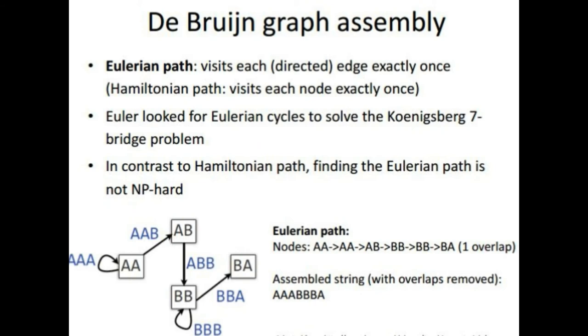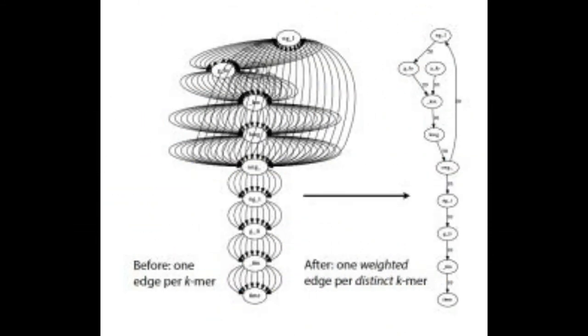The problem with de Bruijn graphs is that the repeats introduce more than once in the Eulerian path, so we can have multiple Eulerian paths. Moreover, the gaps in sequence coverage and sequencing errors can lead to de Bruijn graphs with several connected components. There may also be differences in coverage that can lead to a de Bruijn graph without a Eulerian path.